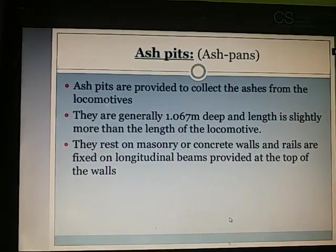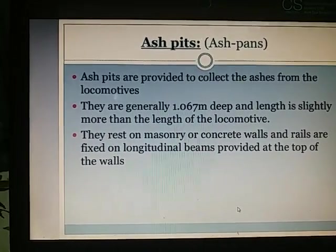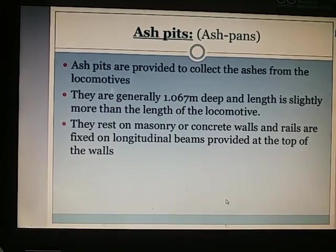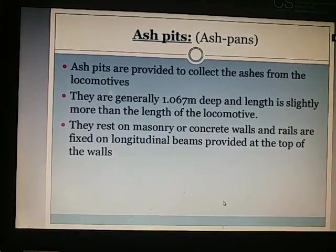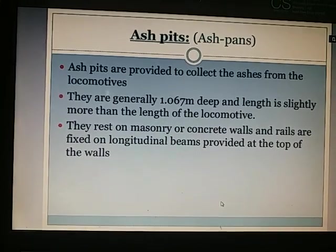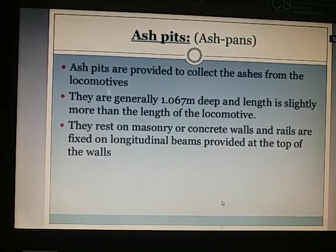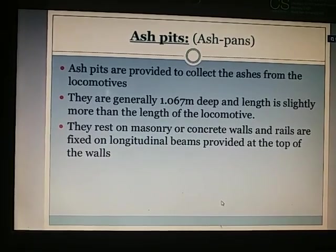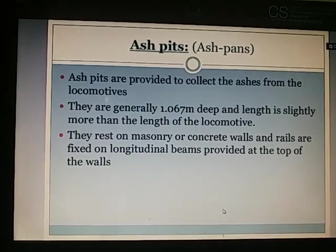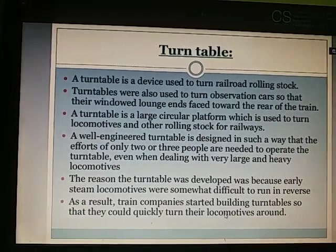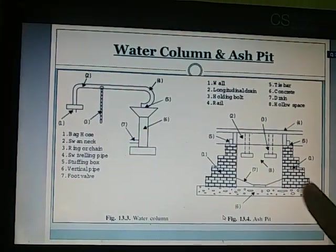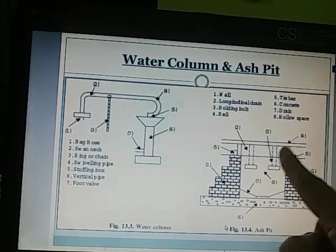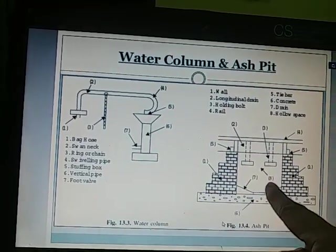Ash pits: Ash pits are required to collect the ashes from the locomotives. They are generally 1.067 m deep and the length is slightly more than the length of the train. They rest on masonry or concrete walls, and rails are fixed on the longitudinal beams provided at the top of the walls. The train rests here and the ash collection system is below.